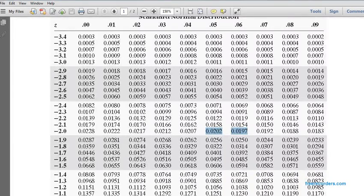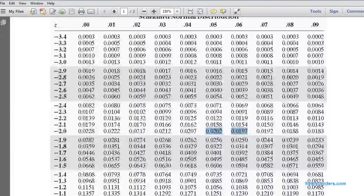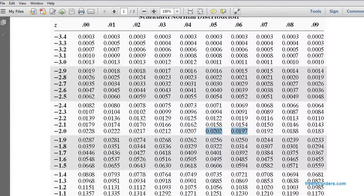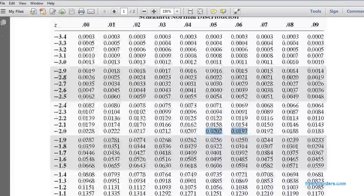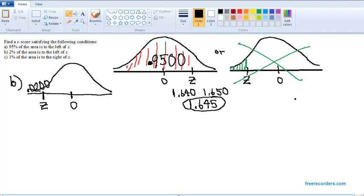When it's exactly halfway between, we pick the number exactly halfway between, but here, which of these two numbers is it closer to? 0.0200 is 2 away from the number on the left, but 3 away from the number on the right, so we pick the one it's closer to, which is 0.0202, and the corresponding z-score is negative 2.05, and that is the answer to part B, negative 2.05.